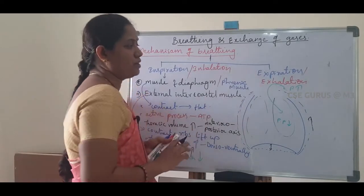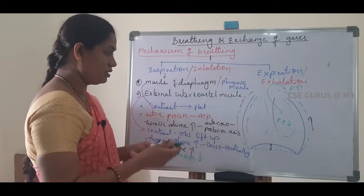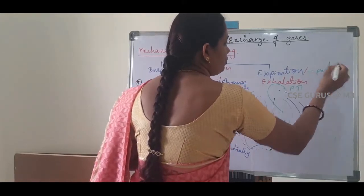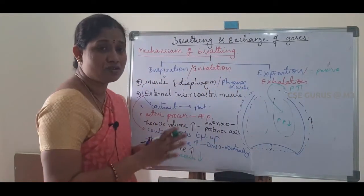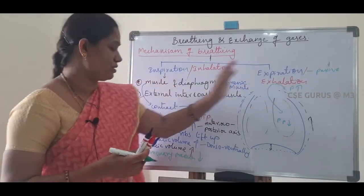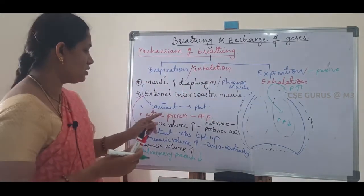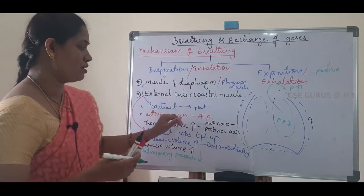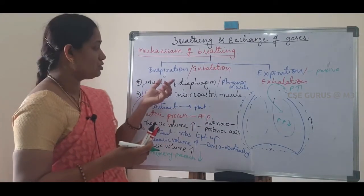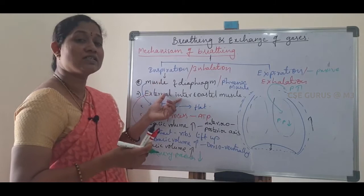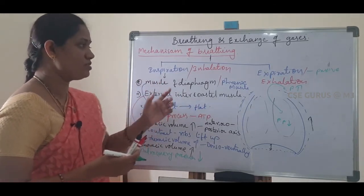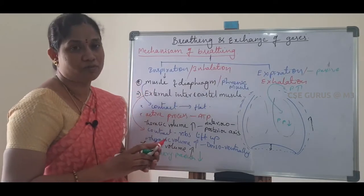Expiration is a passive process — energy (ATP) is not utilized. In inspiration, two types of muscles contract, requiring ATP, making it an active process. In expiration, muscles simply relax, so it is a passive process.